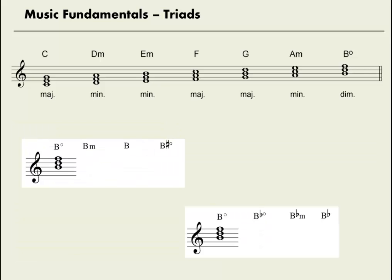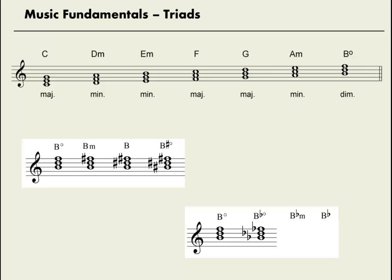Triads built on B can be a little bit tricky. The white note spelling B D F is diminished, so it may take us an extra step or two to build all the B chords. From diminished to minor, we raise the fifth — so B D F sharp. How about B sharp diminished? Well, if B D F is diminished, then B sharp, D sharp, F sharp has to be diminished. Let's try three more: B D F is diminished, so for B flat diminished, lower all three. To go from diminished to minor, raise the fifth — B flat, D flat, F. And for B flat major, raise the third — B flat, D, F.